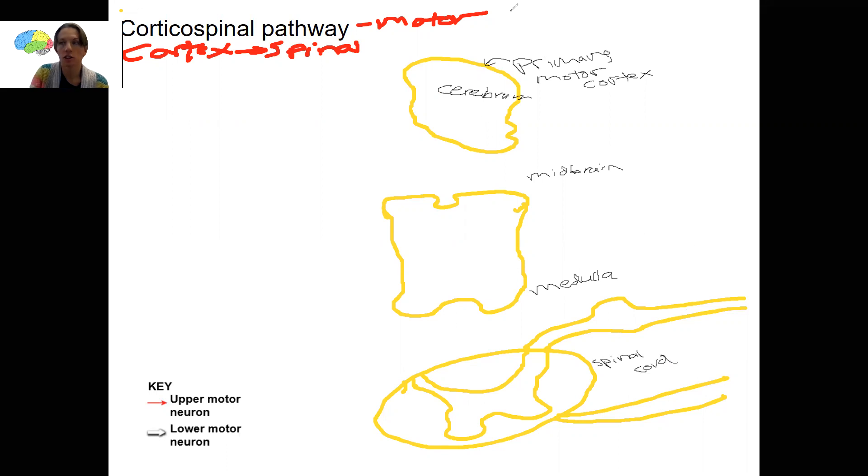So we need to start a signal in the primary motor cortex. This is where we're going to have some neurons. I'm going to just draw it like that, little dendrites. And then here's our cell body.